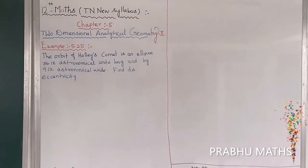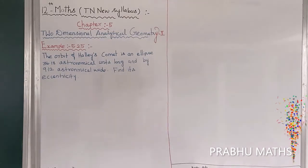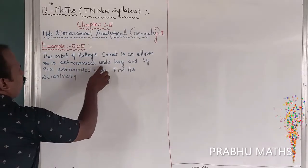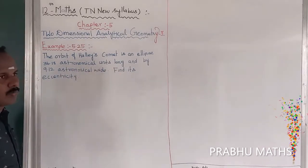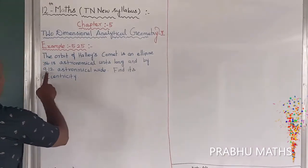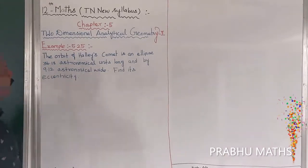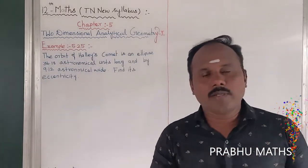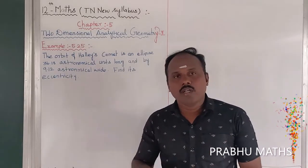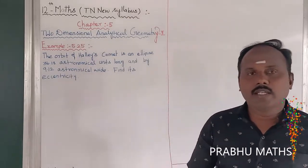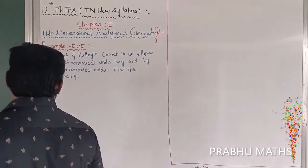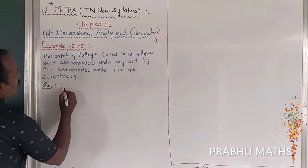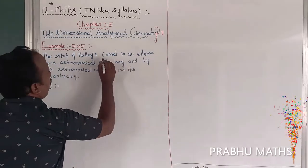Example 5.25: The orbit of a comet is an ellipse 36.18 astronomical units long and 9.12 astronomical units wide. Find the eccentricity. The formula for eccentricity is e = √(1 - b²/a²). First, let's note the given data and draw the diagram. Given: the comet's orbit is an ellipse.